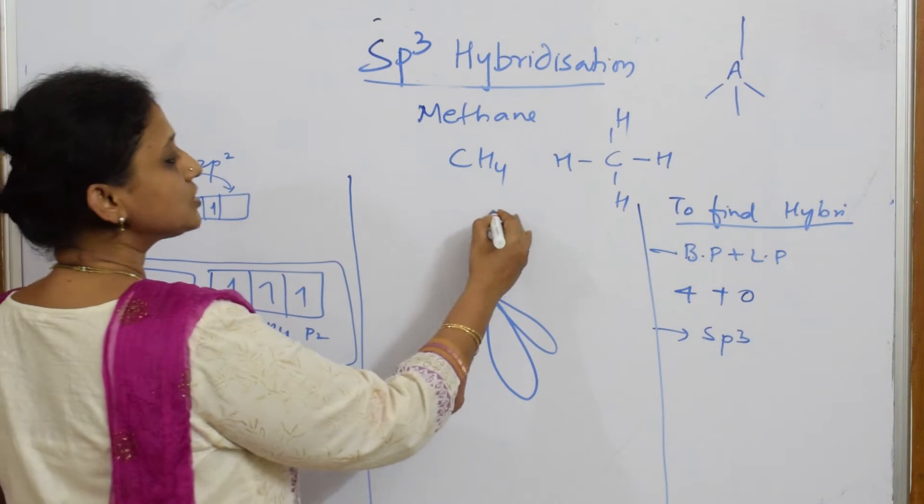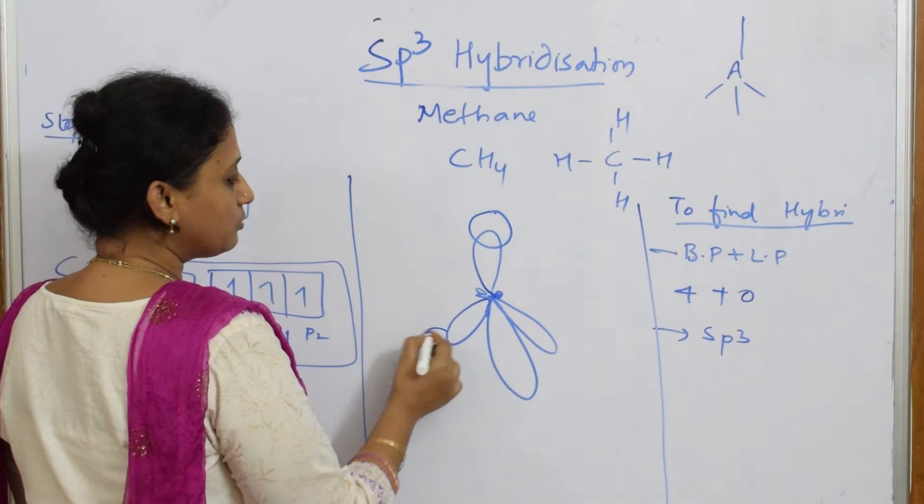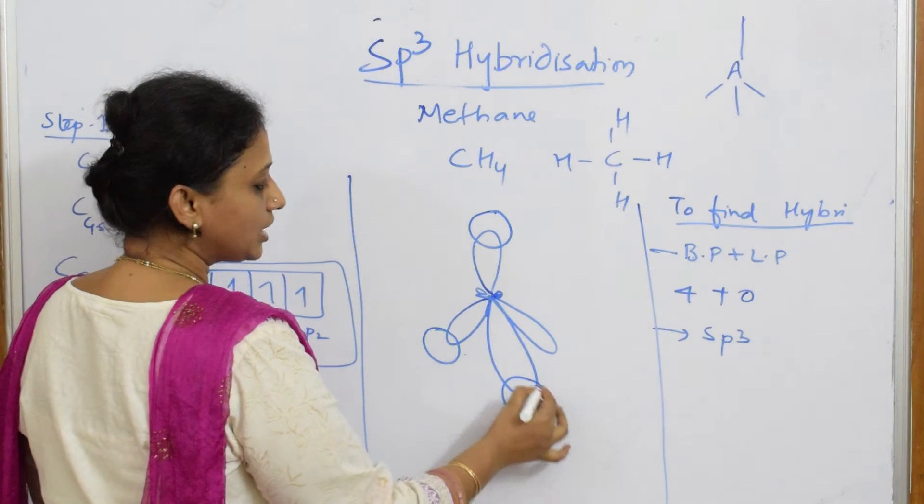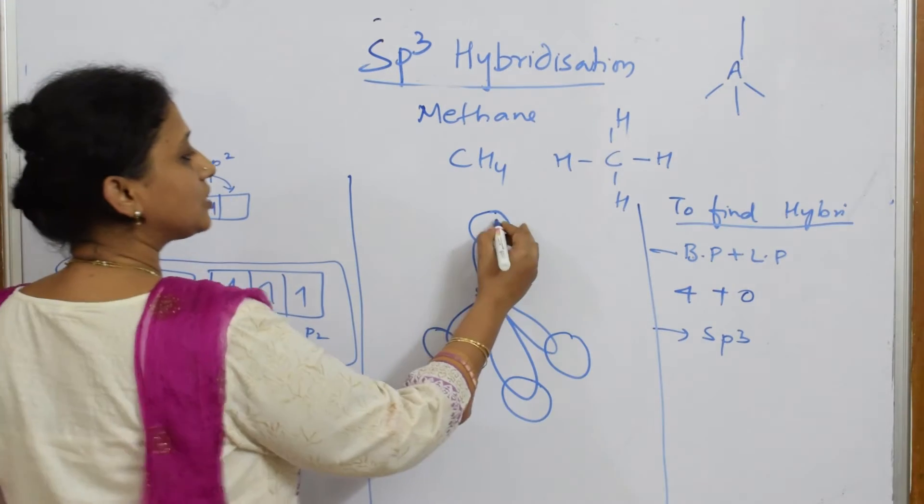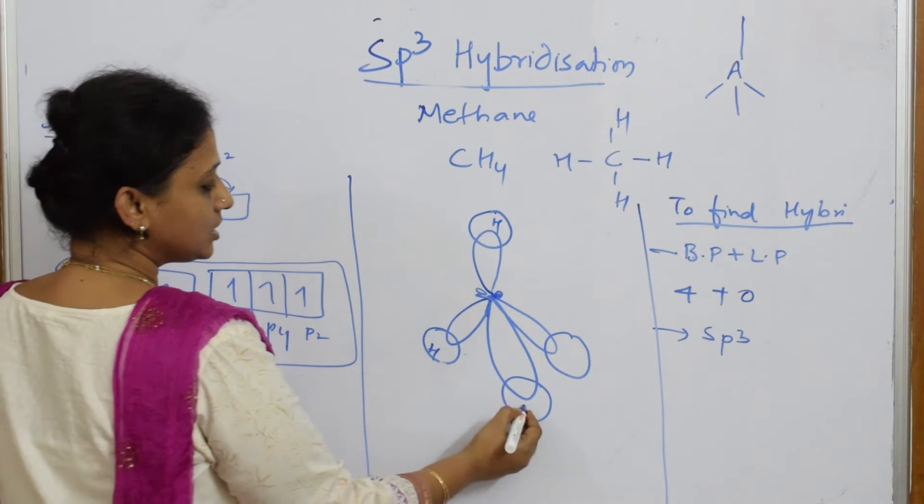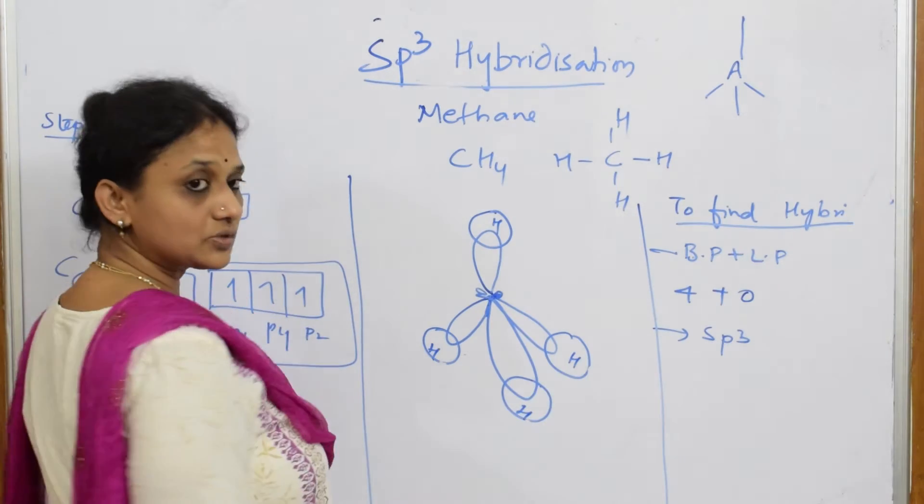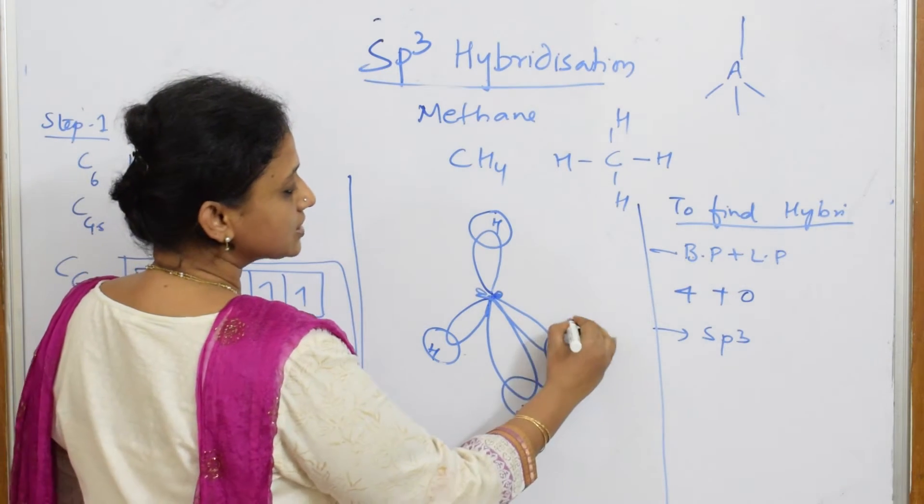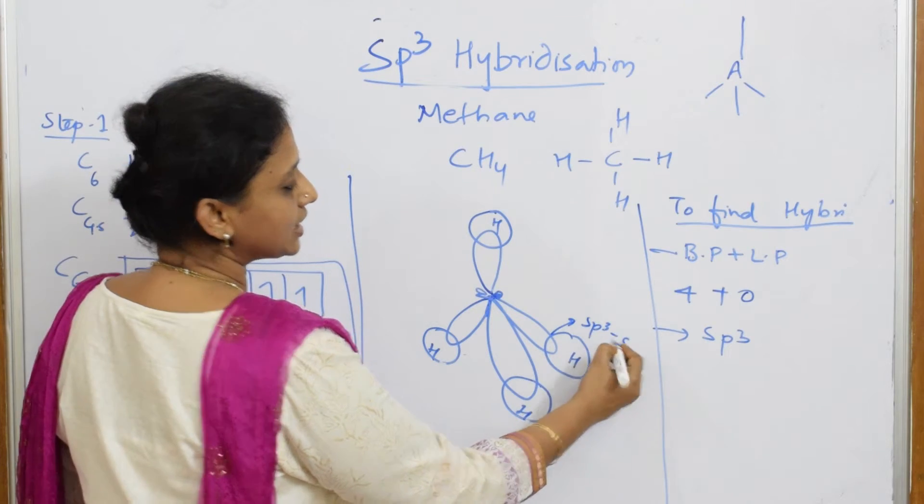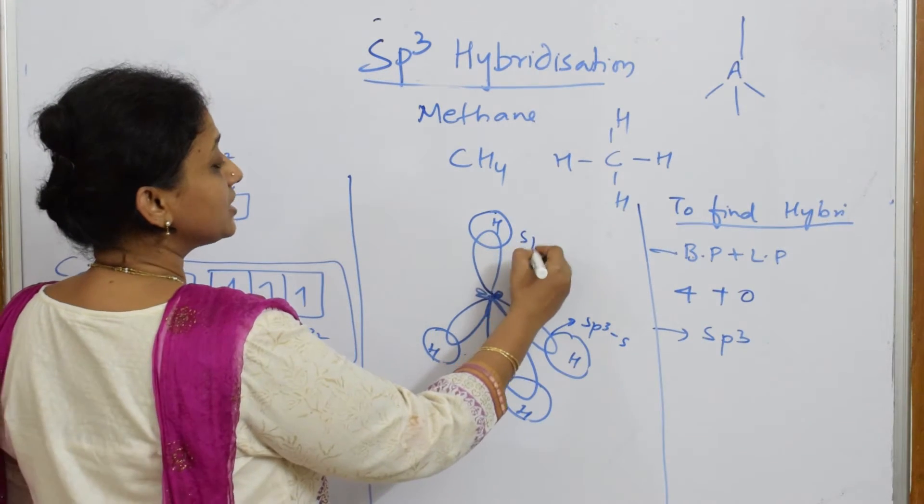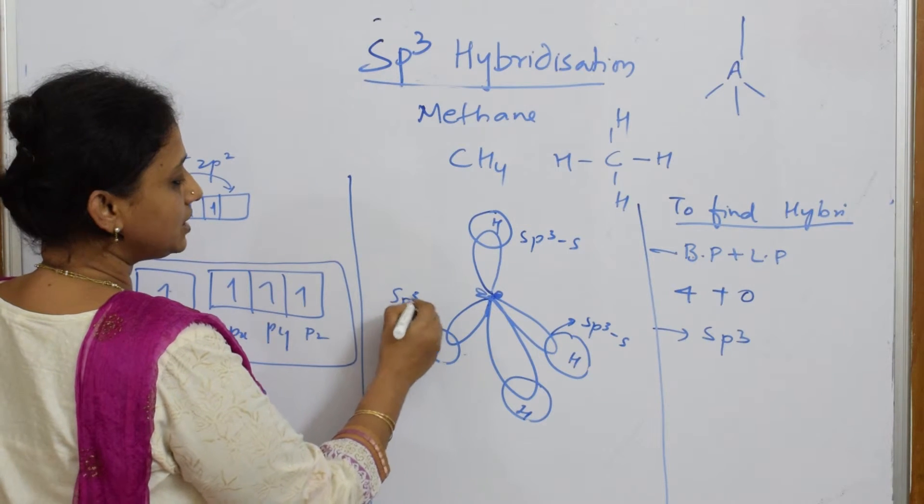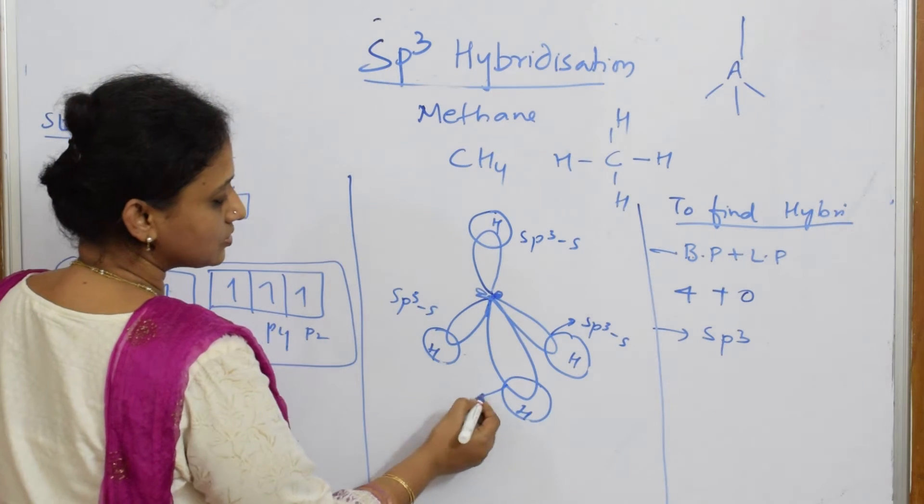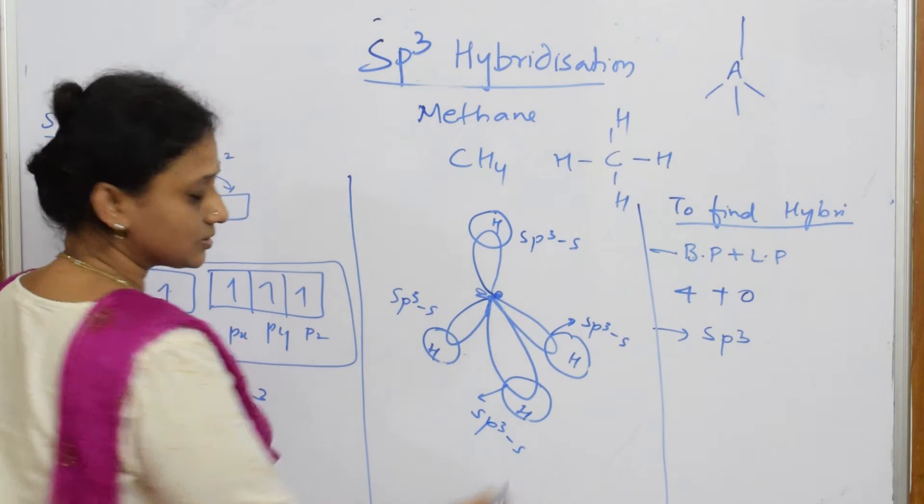Now you have 4 hydrogens, one hydrogen here, one more hydrogen here, one more hydrogen here, one more hydrogen here. So, this is your hydrogen atom, this is your hydrogen, this is your hydrogen, this is your hydrogen. So, what is the type of hybridization here? This is SP3 s-hybridization. Here also, SP3 s-hybridization, and here also, SP3 s-hybridization.